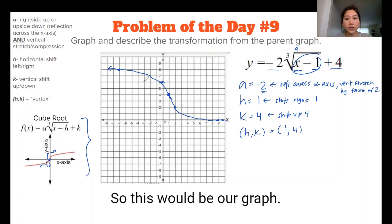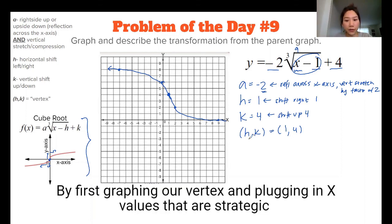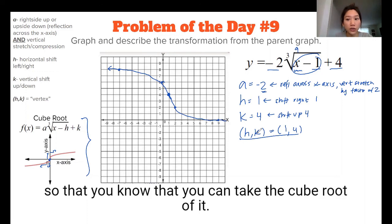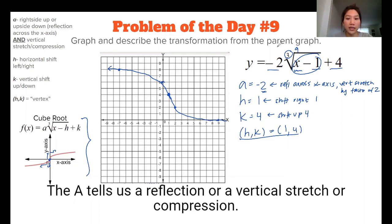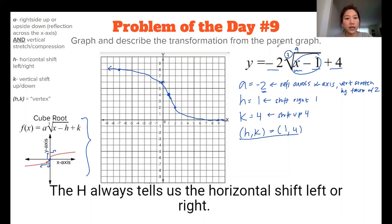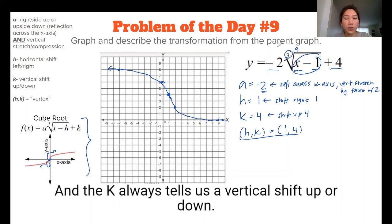And that would be our final answer. So this would be our graph by plugging it, like by first graphing our vertex and plugging in x values that are strategic so that you can take the cube root of it. And then again, the a, the h, and the k always tell us the same thing. The a tells us a reflection or a vertical stretch or compression. The h also always tells us the horizontal shift, left or right. And the k always tells us a vertical shift up or down.